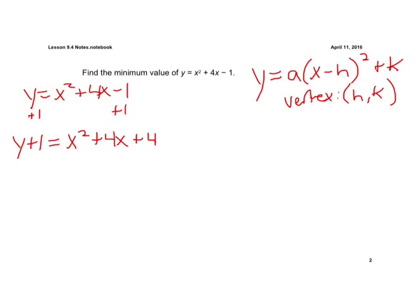Now whatever we do to the right side to keep our equation balanced we also have to do to the left. So we're going to add 4 over here as well. So when we do that we have y plus 5 now equals x squared plus 4x plus 4.